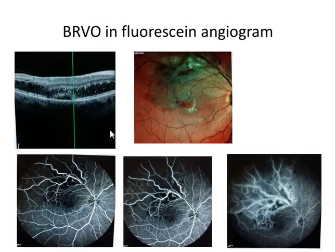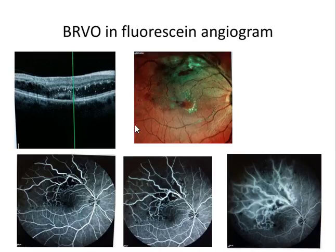These are fluorescein angiogram images showing the area of capillary non-perfusion in the same patient. Blood circulation is absent in this area, and in the late stages there is staining of the blood vessels. This angiogram shows very poor retinal circulation in the area of blockage, placing it at risk of developing complications.